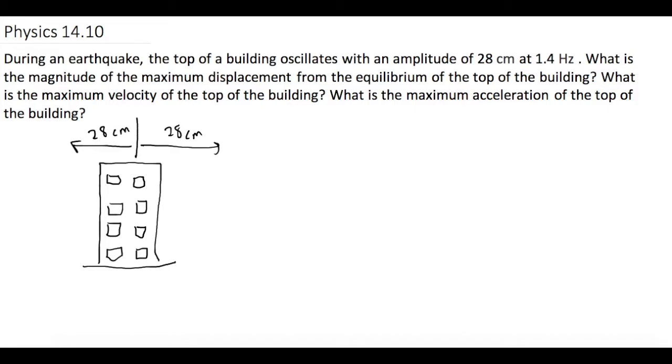It oscillates back and forth from this equilibrium point where the building is stationary and upright, and they tell us the frequency is 1.4 Hertz. So 0.28 meters for our amplitude, frequency is equal to 1.4 Hertz.